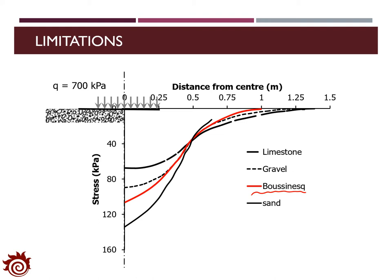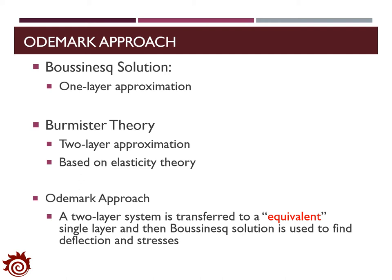In the previous lecture, we introduced two analytical methods for the analysis of stress and strain in flexible pavement. Here we will introduce the third one, the Odemark approach. For the first two methods — the Boussinesq solution and Burmister theory — both provide an approximation about the stress and strain analysis. The Boussinesq solution is applied for a one-layer system, while the Burmister theory is applied for a two-layer system. The third one, the Odemark approach, actually combines the advantages of the Burmister theory and the Boussinesq solution.